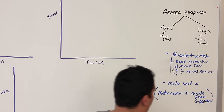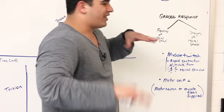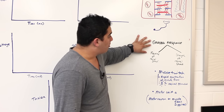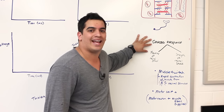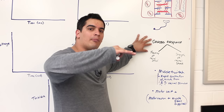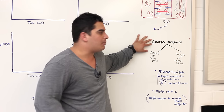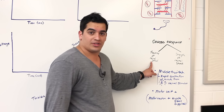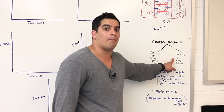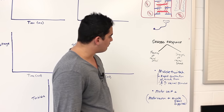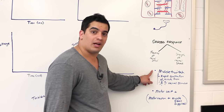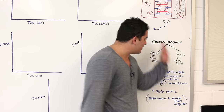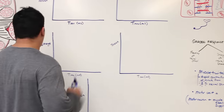A graded response is dependent upon two things: the frequency and the strength of the neural stimulus. It's basically taking the resting membrane potential of a muscle cell — normally around negative 80 to negative 90 millivolts — and bringing it to threshold at about negative 55 millivolts. A muscle twitch is a rapid contraction from one neural stimulus; a motor unit is a motor neuron and all the muscle fibers it supplies. Now let's talk about the phases of a muscle twitch.